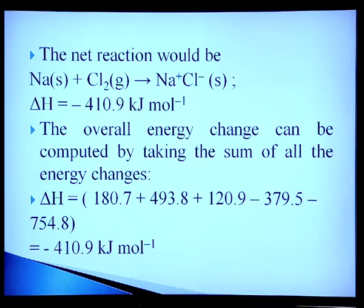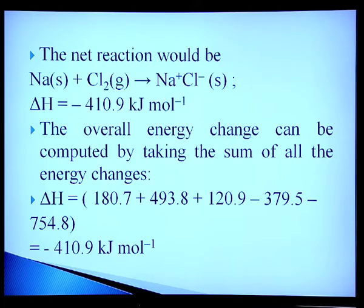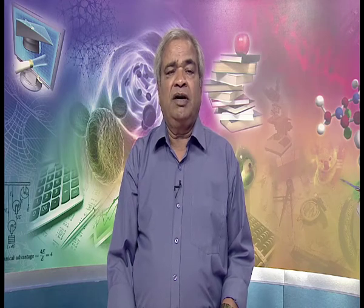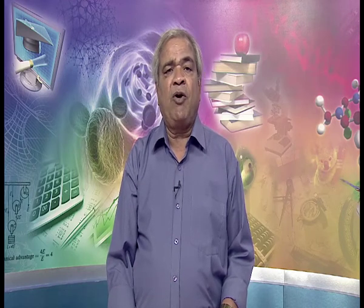The net reaction is Na(s) + ½Cl₂(g) → Na⁺Cl⁻(s), ΔH = −410.9 kJ/mol. The overall energy change is computed by taking the sum of all energy changes, giving −410.9 kJ/mol, which is called the heat of formation. If the heat of formation is negative, the compound will form; if it is positive, the compound will not form.